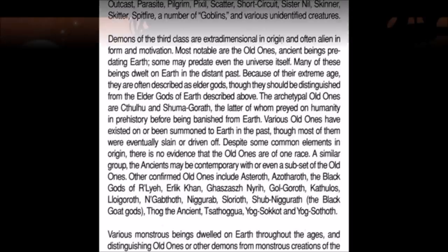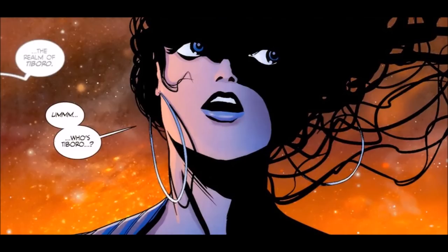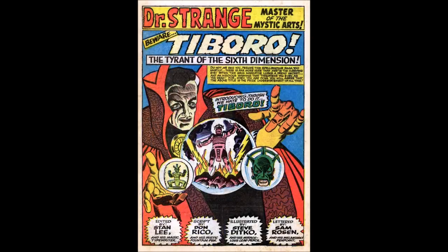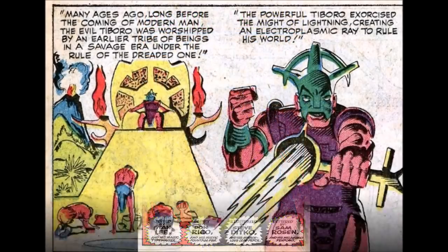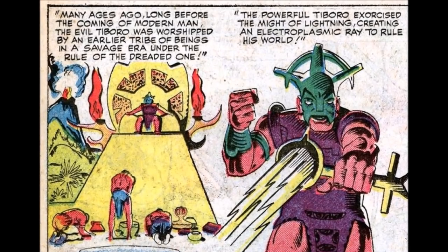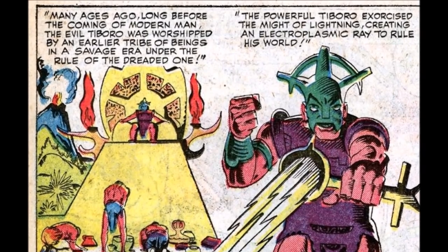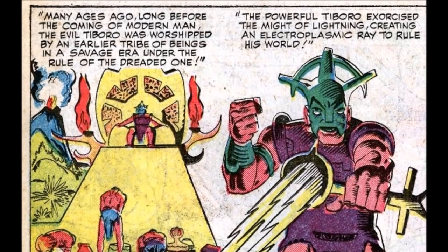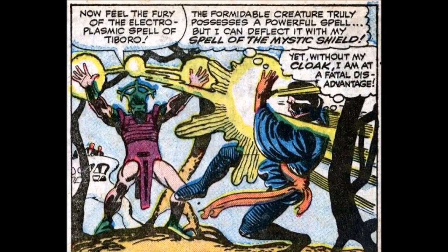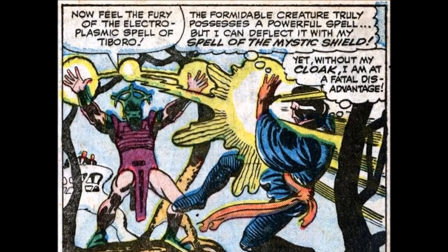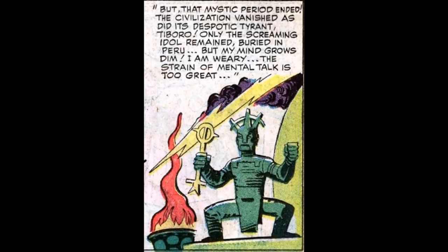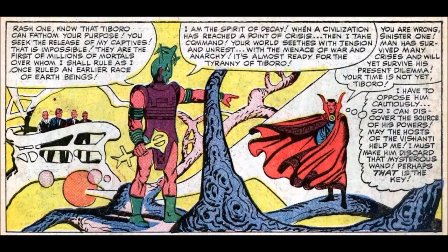The Sixth Dimension is also known as the Realm of Taboo. We caught our first glimpse of the Sixth Dimension in Strange Tales volume 1, issue 129. Many ages ago on Earth, somewhere in what is now Peru, the evil being Taboo was worshipped. Taboo commanded his people and wielded his power via a wand that created and directed lightning at his command, although it should be noted that Taboo retains the ability to cast electroplasmic spells without the aid of his wand. One day Taboo and all his people vanished, and only the screaming idol remained — this effigy of their leader became a gateway leading to the Sixth Dimension.